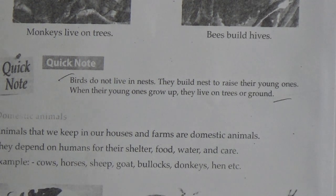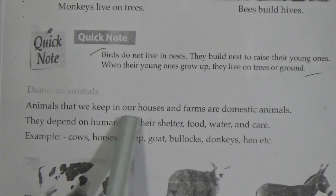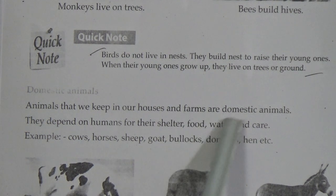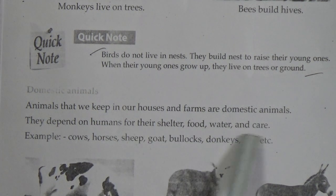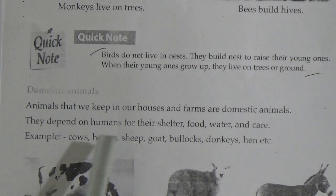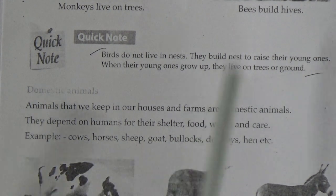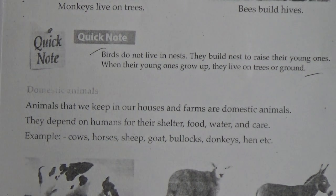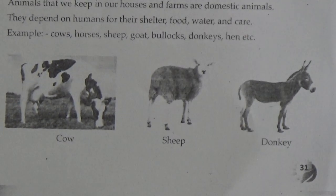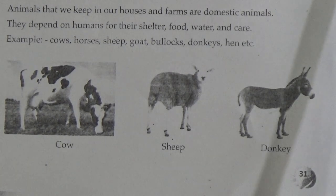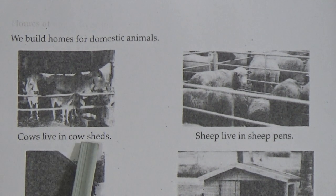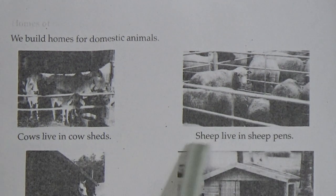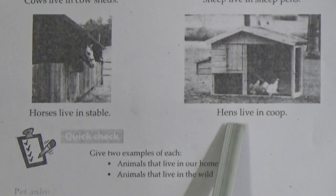Next is domestic animals. Animals that we keep in our houses and farms are called domestic animals. They depend on humans for their shelter, food, water, and care. Examples: cows, horses, sheep, goats, bullocks, etc. Cows live in a cow shed, sheep live in a pen, horses live in a stable, and hens live in a coop.